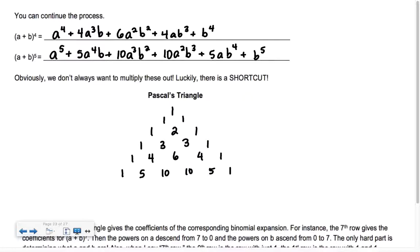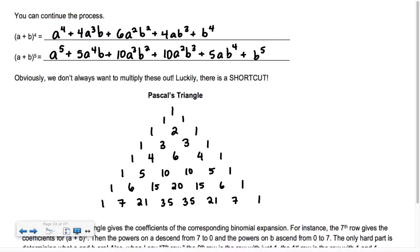Let's go to row 7. The row after 1, 5, 10, 10, 5, 1 would be 1, 6, 15, 20, 15, 6, 1 — notice every other row has a repeated middle number like 10, 10 versus 15, 20, 15. Then row 7 is 1, 7, 21, 35... Each row of Pascal's Triangle gives the coefficients of the corresponding binomial expansion.